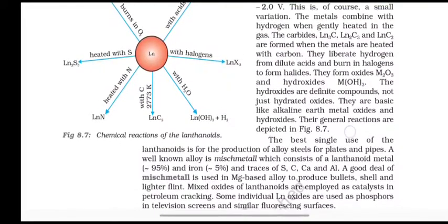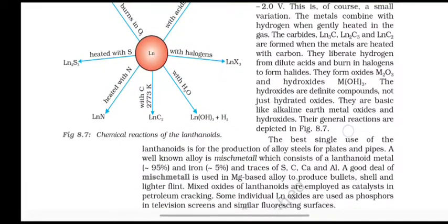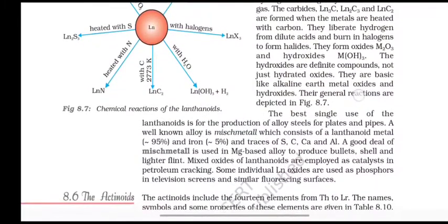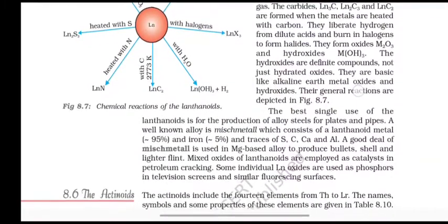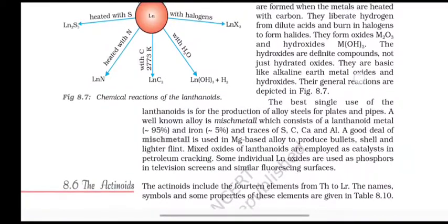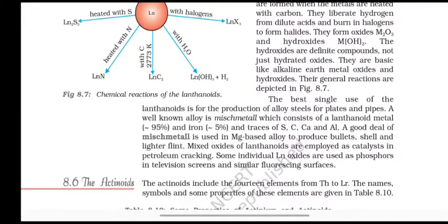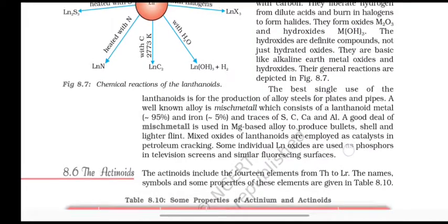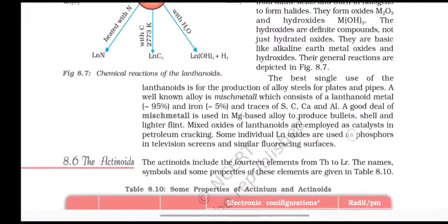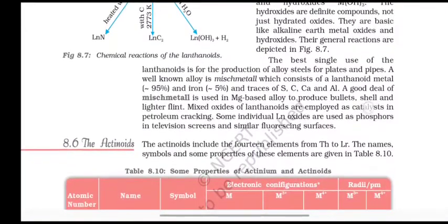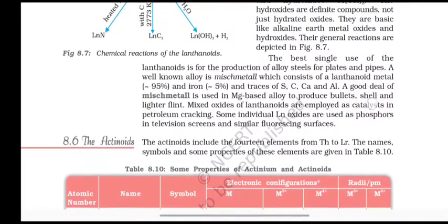The metals combine with hydrogen when gently heated in the gas. The carbides Ln3C, Ln2C3, and LnC2 are formed when the metals are heated with carbon. They liberate hydrogen from dilute acids and burn in halogens to form halides. They form oxides M2O3 and hydroxides M(OH)3. The hydroxides are definite compounds, not just hydrated oxides. They are basic, just like alkaline earth metal oxides and hydroxides. Their general reactions are depicted.